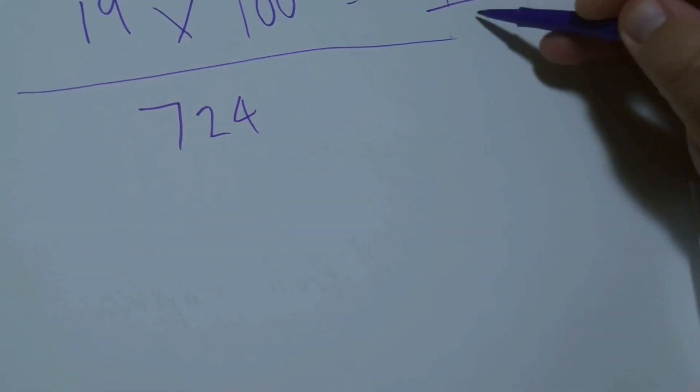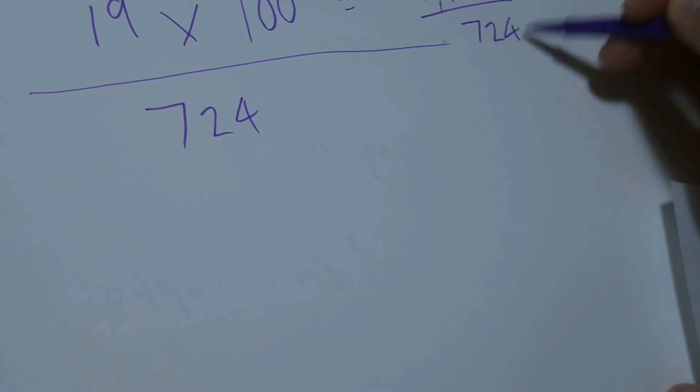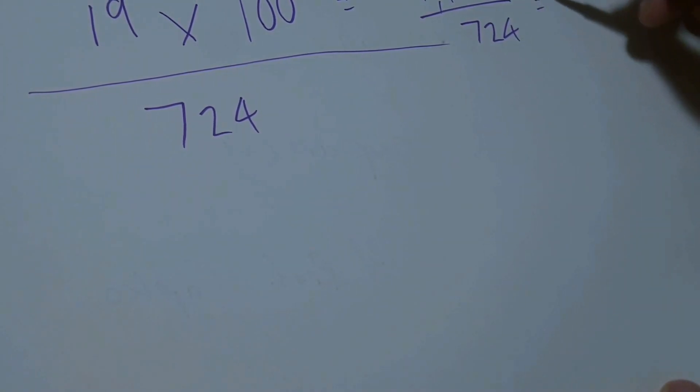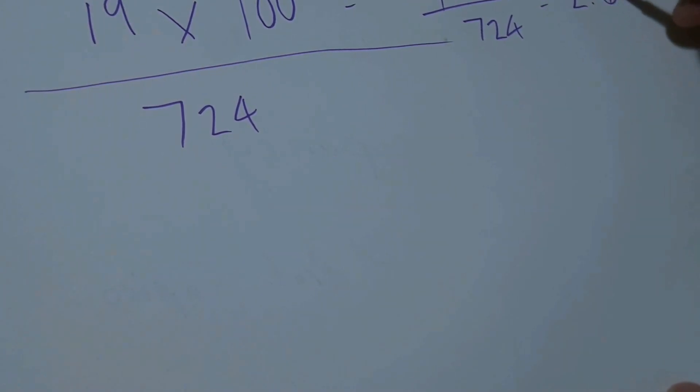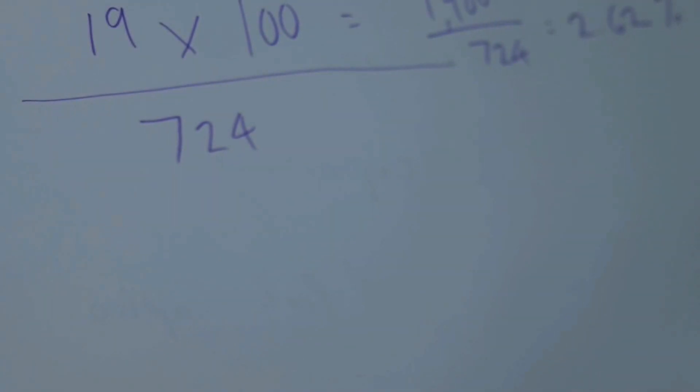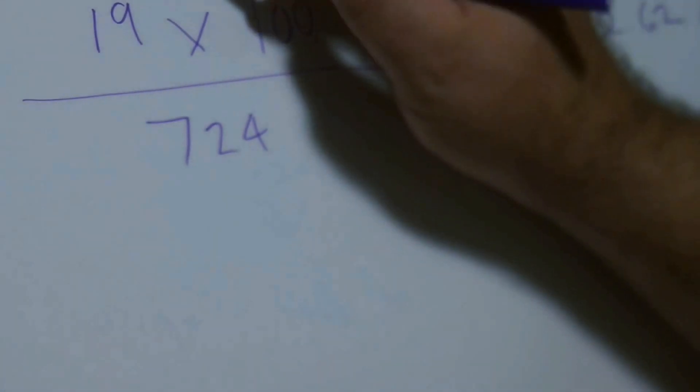So we have 1900 divided by 724. And if you throw that into the calculator, you divide 1900 by 724, you get 2.62. And since we multiplied it by 100, that's a percentage. So it's 2.62%, a little bit less than 3%. So that's the gross death rate.